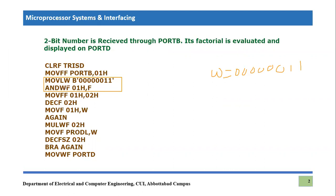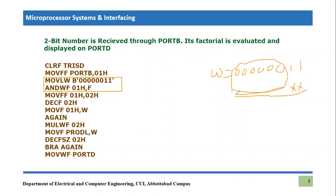Then what we are doing is ANDing W with the file register 01h. So this information is being logically ANDed — we are applying an AND gate. We are ANDing it with 01h, which is the number received from Port B. We know that for this application only the two LSBs are important, and the most significant bits are being ANDed with zeros. You know from the DLD or digital logic course that whenever you AND anything with zero, the result becomes zero.